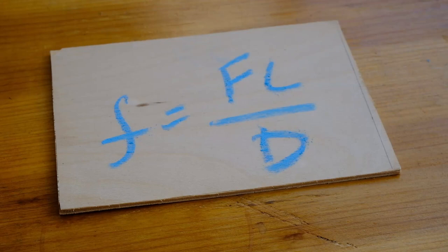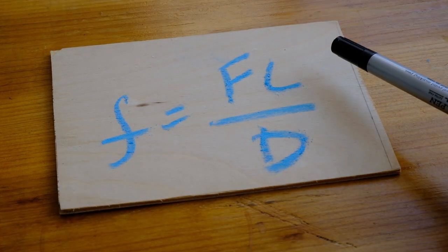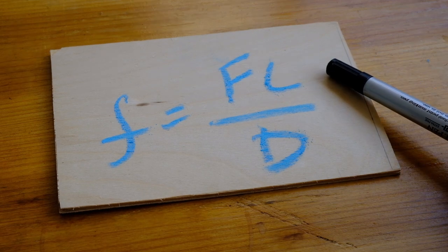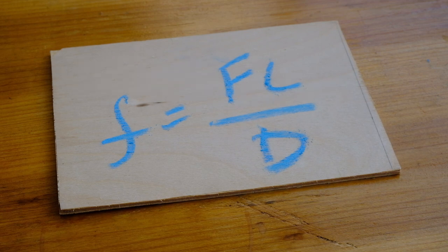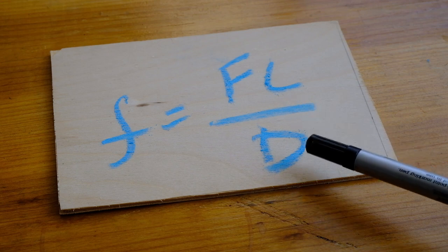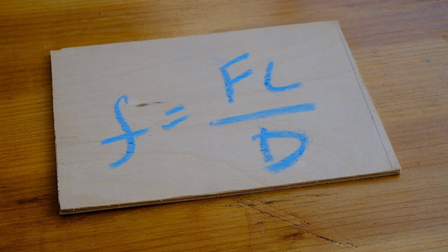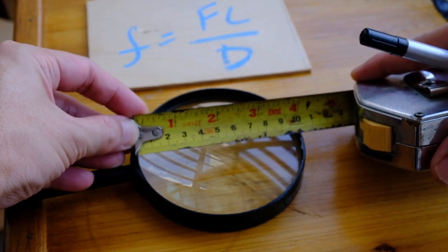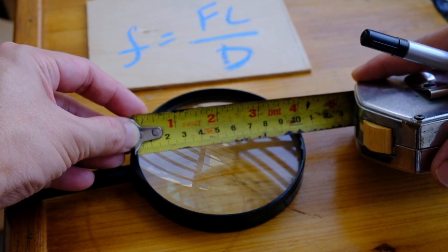So how do we determine the f-stop of the magnifying glass lens? We can use this simple formula: the f-stop is equal to the focal length divided by the diameter. We can measure the focal length by focusing the lens at infinity and measuring the distance from the lens to the ground glass where a sharp image is formed. The diameter of the magnifying glass lens is about 100mm or 10cm.